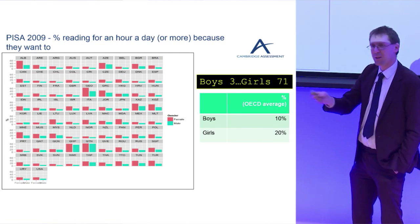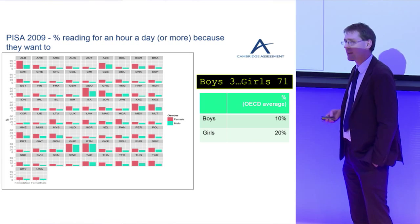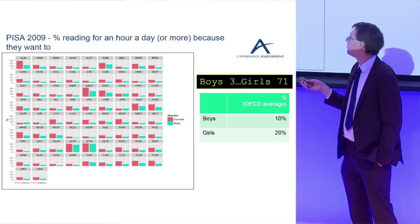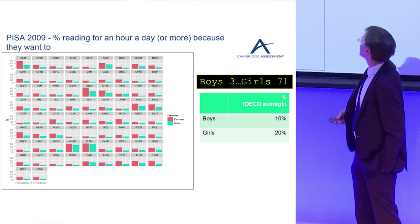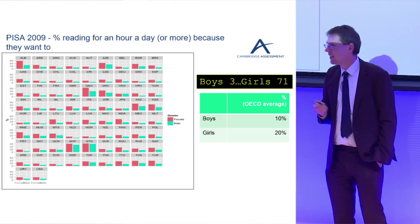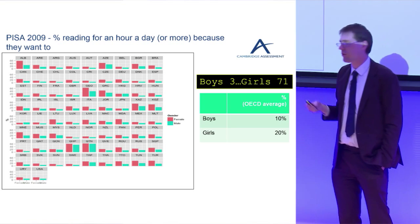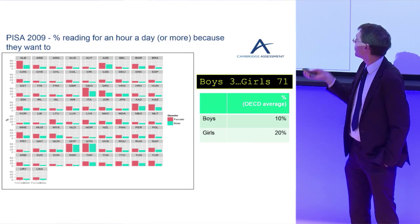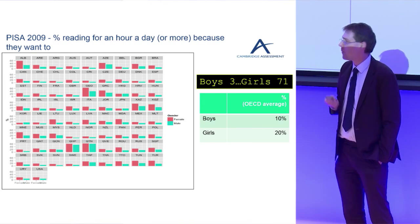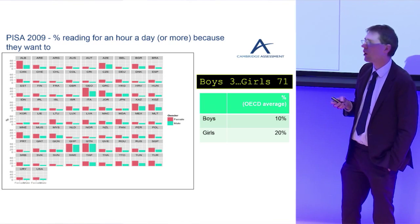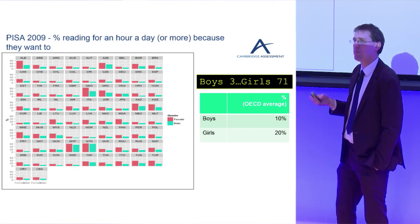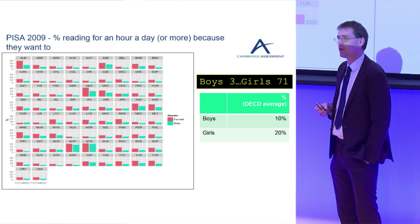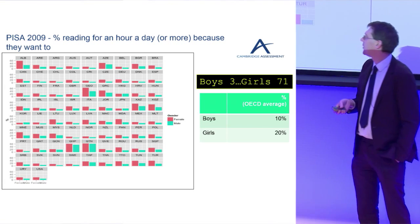The reverse effect is found if we look at reading for pleasure. In all countries except for three, boys are less likely to say they read for at least an hour a day by choice — not for school work, but for pleasure. The only three countries that buck this trend are Japan, Korea, and Hong Kong, where reading comics is very popular. If we looked at just reading fiction, every single country would show girls doing this more than boys.